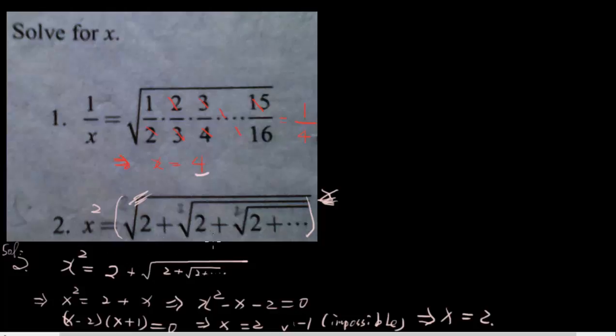But this is x. x equals the root of 2 plus the root of... so this is x. So we got x squared equal to 2 plus x.